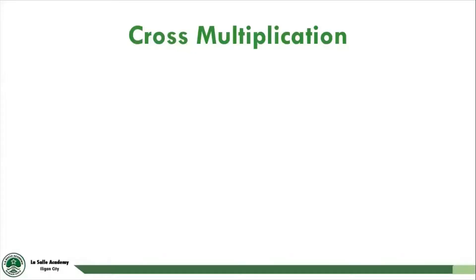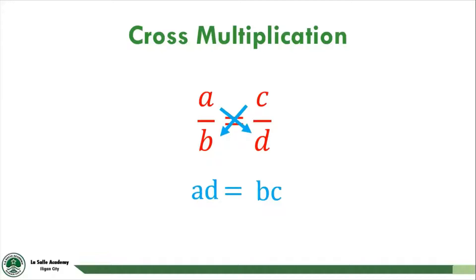This is how cross-multiplication works. If we have an equation in the form a over b is equal to c over d, where a, b, c, and d are numbers, variables, or algebraic expressions, then upon cross-multiplying, a times d is equal to b times c. We can use this method if our equation involves one single fraction on each side of the equation.